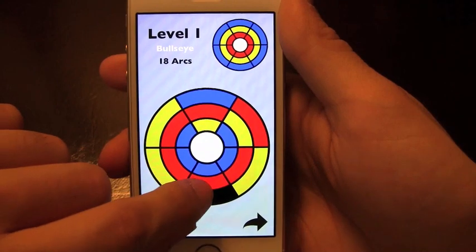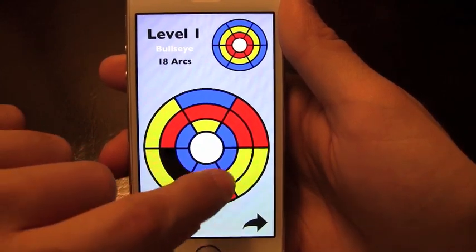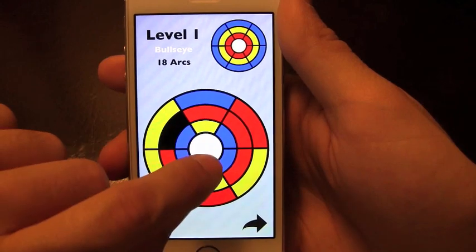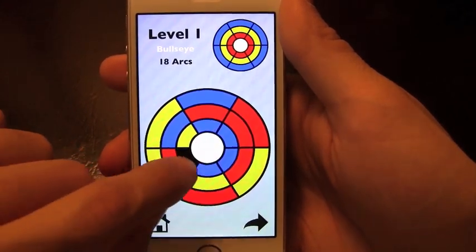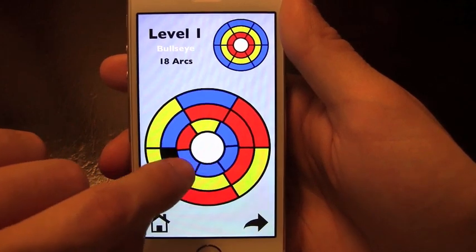So basically, this arc is going to control wherever the piece goes. So if I want a piece to go into the inner circle, which I do with the red, then I'll move the arc into the inner circle, and now I'll move the red right in, and then I've got to keep on doing that.